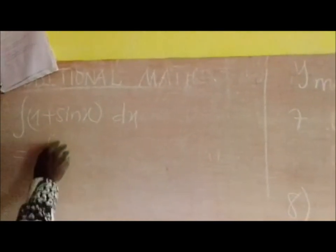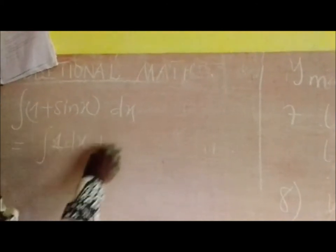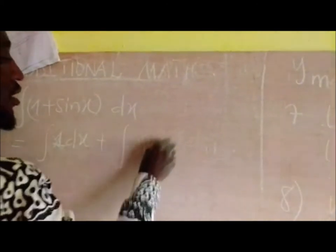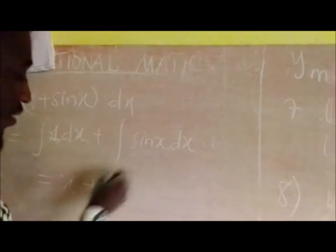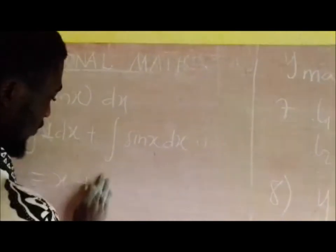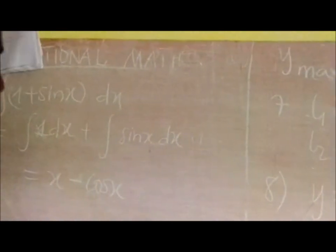You know, the integration is distributed over addition, so I want to add the integral of 1 dx plus the integral of sine x dx. The integral of 1 dx is x, because the integral of sine x is going to give me negative cos x.